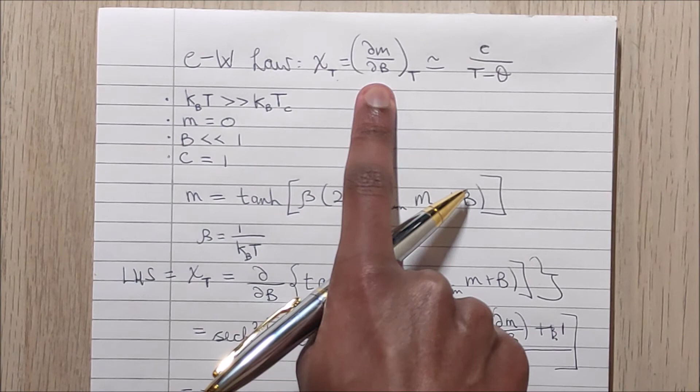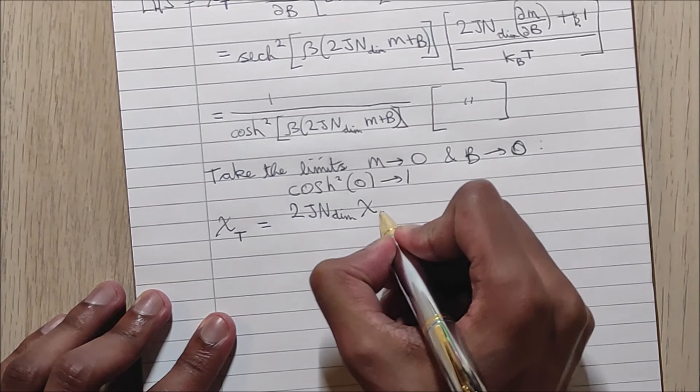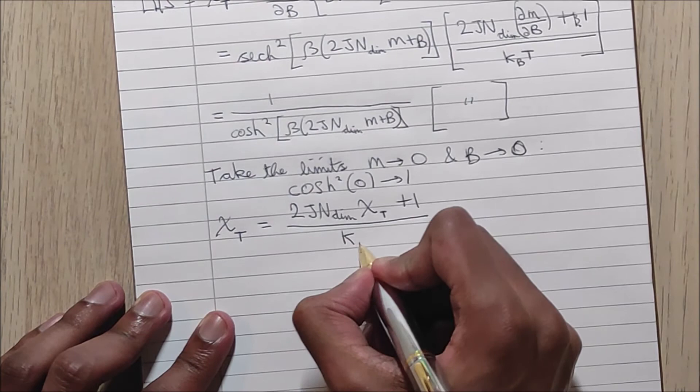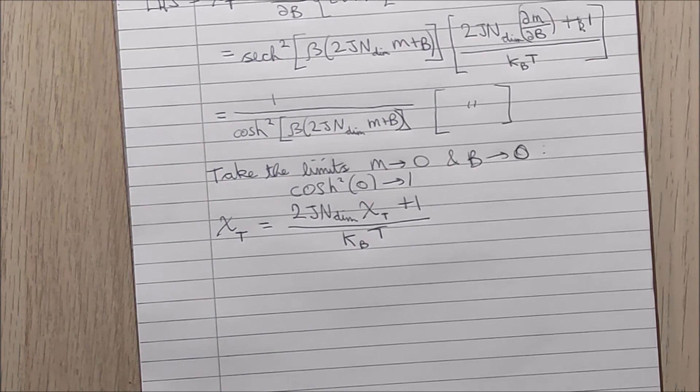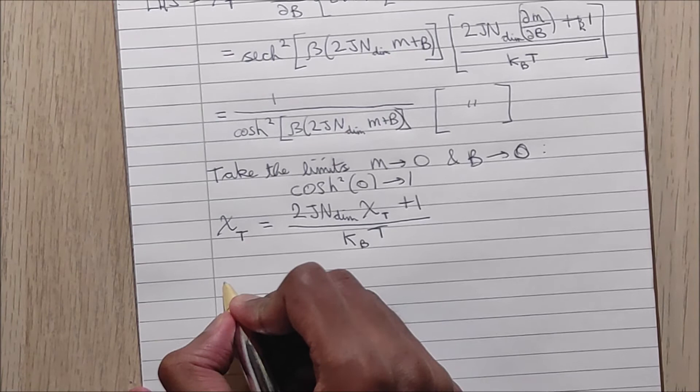And then here I'm also going to substitute the Curie-Weiss law from the very top of this page, where I have chi subscript t is equal to this derivative, which I'm going to substitute in here and get a chi subscript t here plus one over KBT from this term.